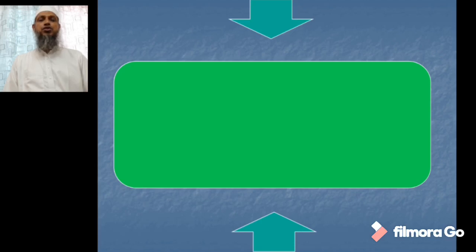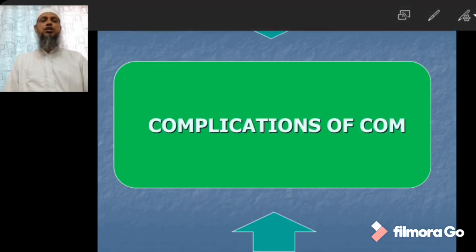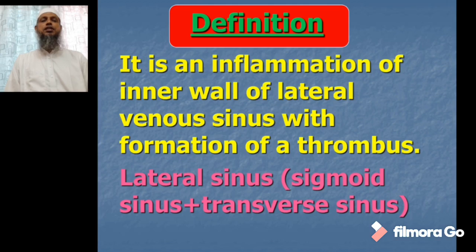Today my topic is lateral sinus thrombosis. Lateral sinus thrombosis is one of the complications of chronic otitis media, which accounts for 30% of intracranial complications in the pre-antibiotic era. Now, sigmoid sinus thrombosis or lateral sinus thrombosis is very rare but an extremely serious complication. The definition is: the inflammation of the inner wall of the lateral sinus with formation of a thrombus. The lateral sinus comprises the sigmoid sinus and the transverse sinus together.